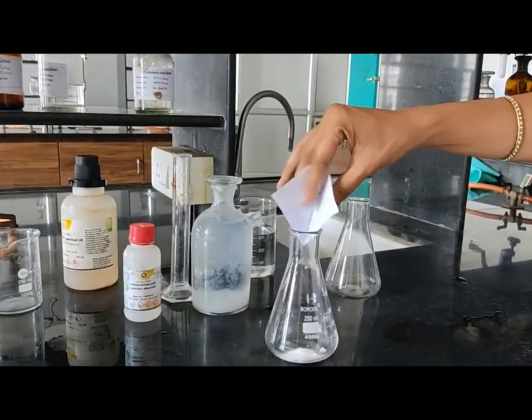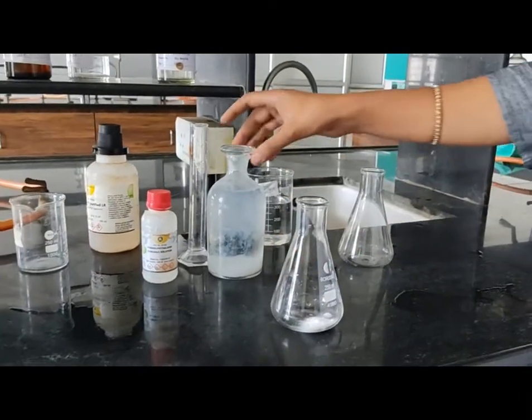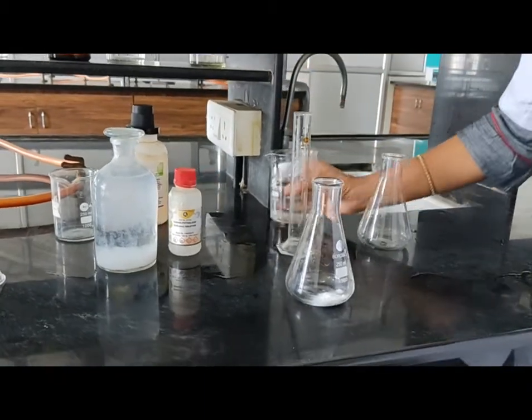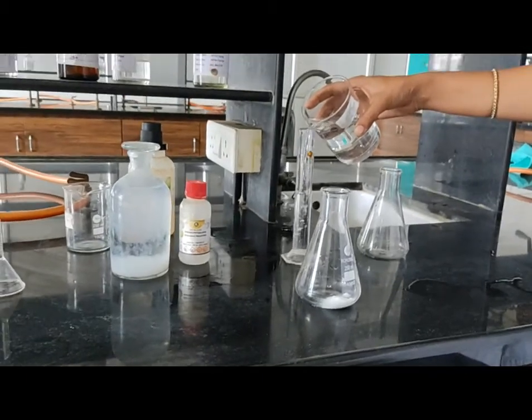Now add this 5g of potassium hydrogen phthalate into the 250ml conical flask and dissolve it into 75ml of carbon dioxide free water, distilled water.